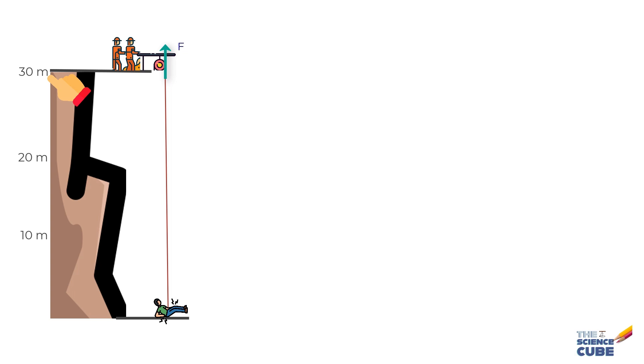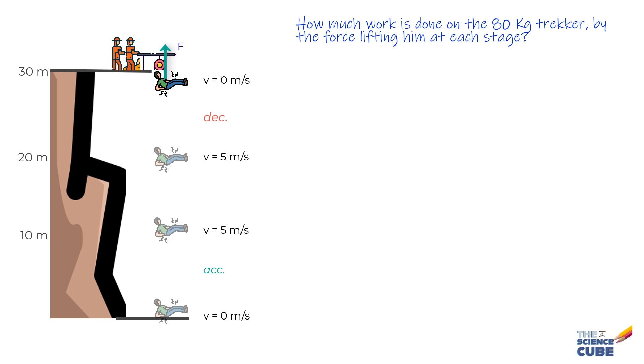Initially the trekker is accelerated to a speed of 5 meters per second. He is then lifted at a constant speed of 5 meters per second and then finally he is decelerated to zero speed. And the question is, how much work is done on the 80 kilogram trekker by the force lifting him during each stage?